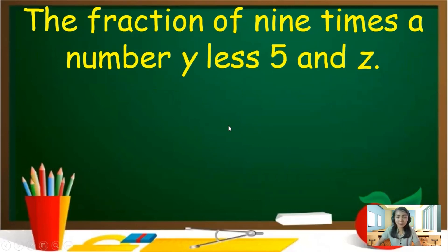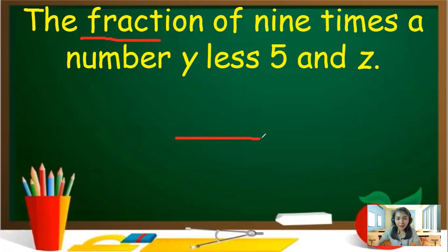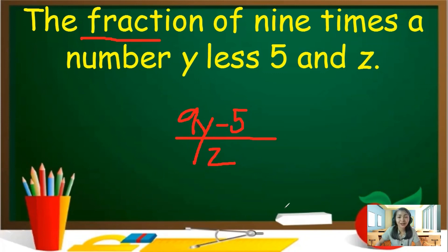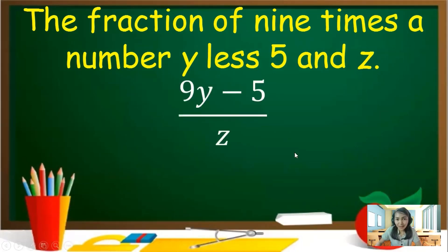Next: 'The fraction of 9 times a number Y, less 5, and Z.' Fraction means division, so draw a fraction bar. '9 times a number Y' — combine 9 and Y. 'Less 5' means subtraction — write minus 5. 'And Z' — Z will be the denominator. So the final answer is 9Y minus 5 over Z.